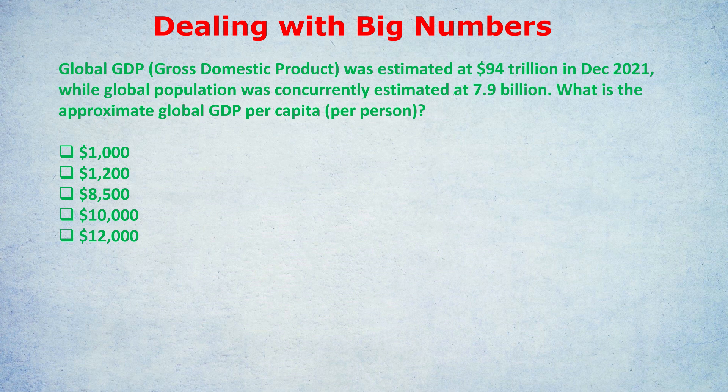Next question. Global GDP — gross domestic product — was estimated at $94 trillion in December 2021. True stat. While global population was concurrently estimated at 7.9 billion. What is the approximate global GDP per capita? That phrase 'per capita' means per person. So quite clearly, we need to divide $94 trillion by the 7.9 billion people to get how many dollars each person has on average.